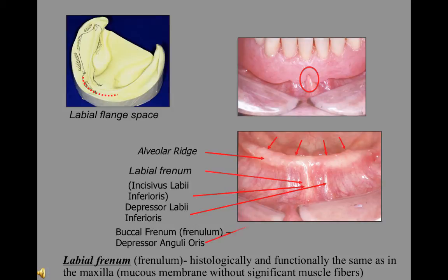The buccal frenum, histologically and functionally, is the same as the maxilla also. The muscles beneath this frenum — the depressor anguli oris — can definitely have an effect on the stability of the denture. When the muscle flexes, it is capable of raising the denture.